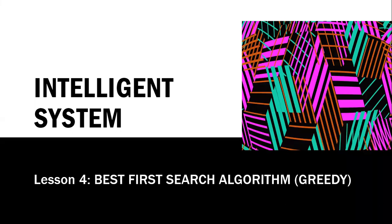Our topic for today is about best-first search algorithm. If we consider searching as a form of traversal in a graph, an uninformed search algorithm will blindly traverse to the next node in a given manner without considering the cost associated with the step. An informed search,